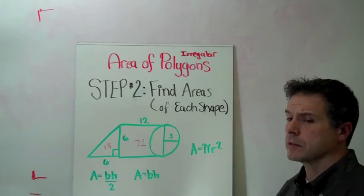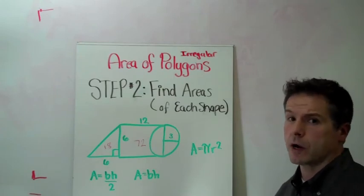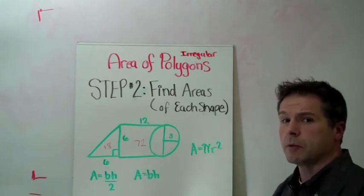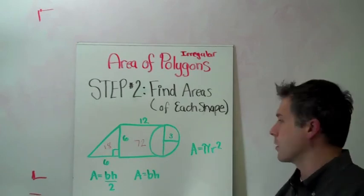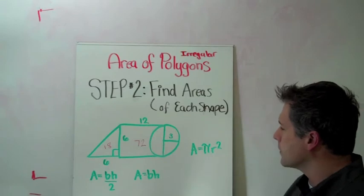And by the way too this would be 72 units squared. We didn't specify what those units are, but when we talk about area we always have a square. It's how many squares.